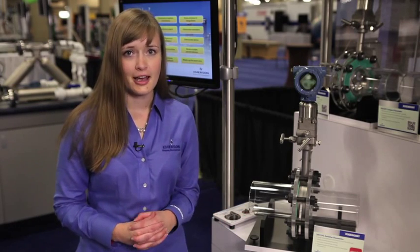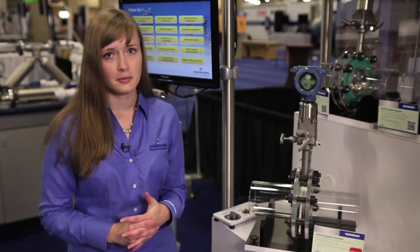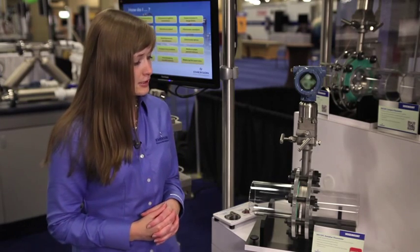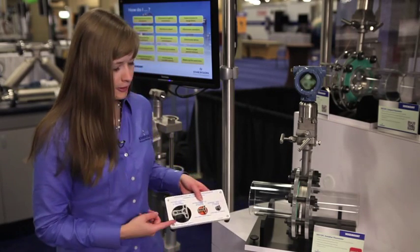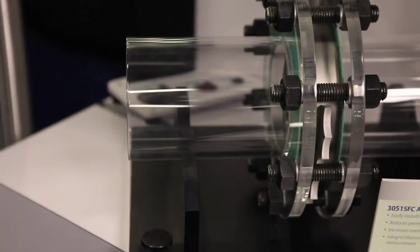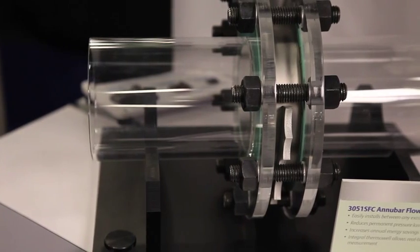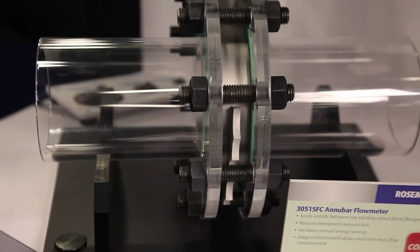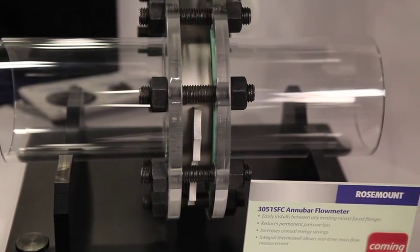I hope you've learned today how the 405A Compact Anubar Flow Meter combines the benefits of the 485 Primary Element and the 405 Compact Design. The 405A is an easy to install flow meter option that conserves energy through lower permanent pressure loss.